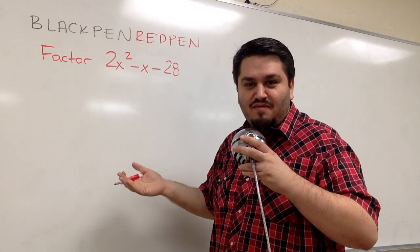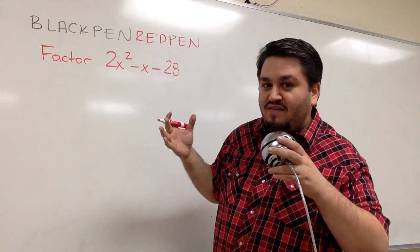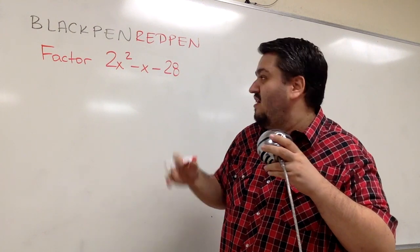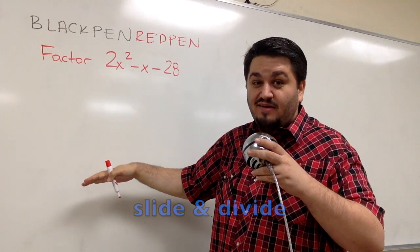So, if the coefficient is not one, there are many other techniques you could use. There is the cross method. There is any kind of other AC grouping methods that you could use. We're going to do something called the slide and divide. Are you ready? Go!